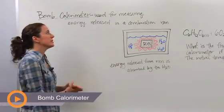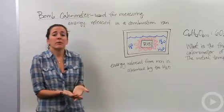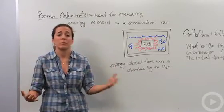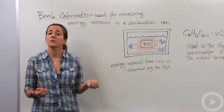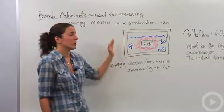We know that combustion reactions are extremely exothermic, meaning they release a lot of heat when they go forward. So how do we know how much heat they actually do release? Well, we have this thing called a bomb calorimeter, and this is a very simple drawing of what one looks like.